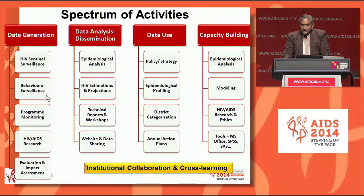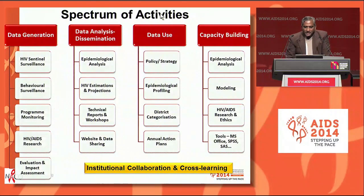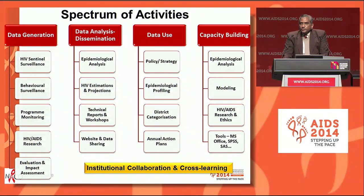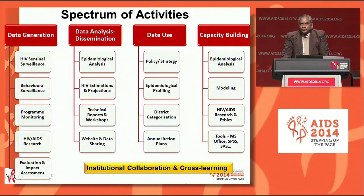We have already gone through some of the areas by which we generate the data. We have data analysis done through epidemiological means, estimations and projections, and also through website and data sharing approaches. Data use for policy and strategy making, epidemic profiling, district categorization, and for developing the action plans. Building capacity is something which is very important. For example, in case of modeling, earlier the capacity was limited to just a handful of people working at the national level with the support of UNAIDS who were developing the estimations. In 2012, we took a conscious decision to broad-base this so that we developed the resources at the state level also. So we had a group of 55 persons from the medical colleges and research institutions who were trained with experts from UNAIDS, and they were actively involved in the process, so that further they could take it up at the state level also for dissemination and for making further analysis useful for the states.